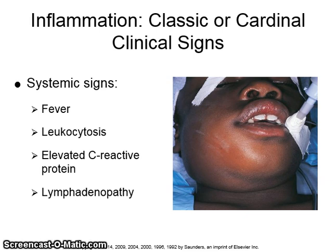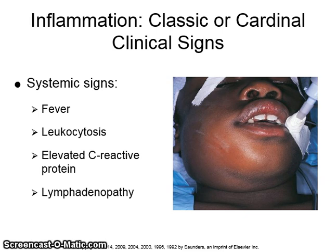Fever is an elevation of body temperature to greater than the normal level of 98.6 degrees Fahrenheit. Leukocytosis is a temporary increase in the number of white blood cells circulating in the blood. C-reactive protein is a nonspecific protein produced in the liver that becomes elevated during episodes of acute inflammation or infection. Lymphadenopathy is an abnormal enlargement of lymph nodes.